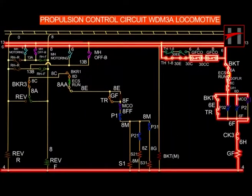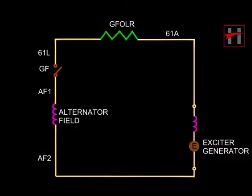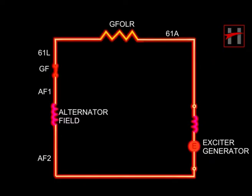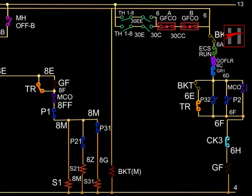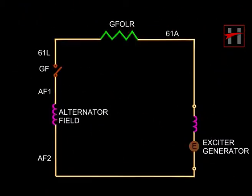The role of the generator field contactor circuit or the GF circuit in diesel locomotives is similar to a main switch in any general electrical system. When the GF is closed, electrical power is available from the traction generator or the traction alternator. Therefore, the interlocks of protective devices are provided in the generator field contactor circuit so that, in the event of a fault, the GF opens and power from the traction generator or the traction alternator is withdrawn.